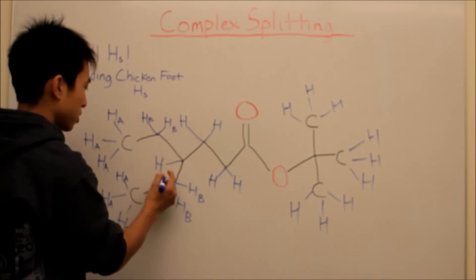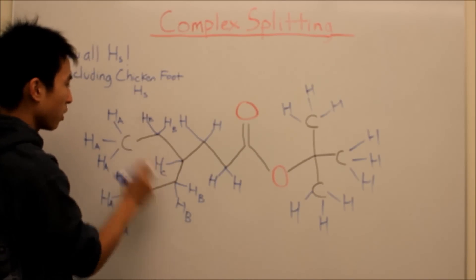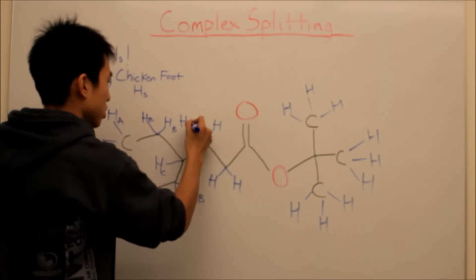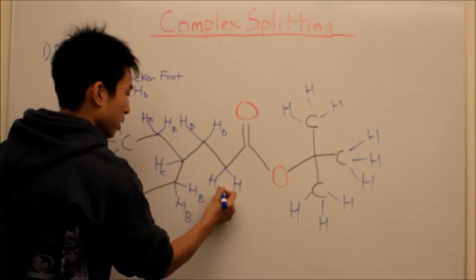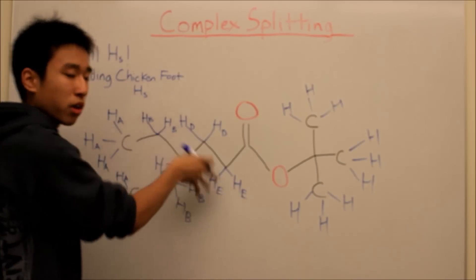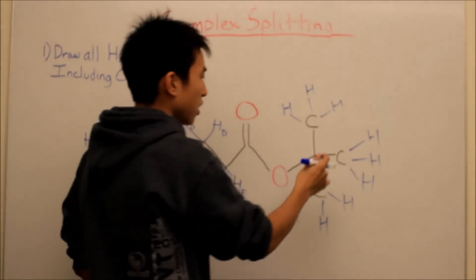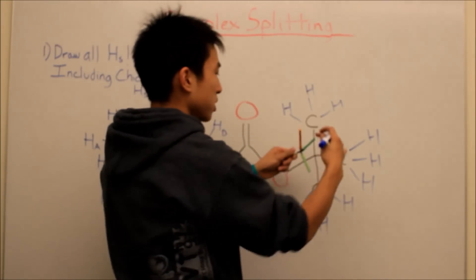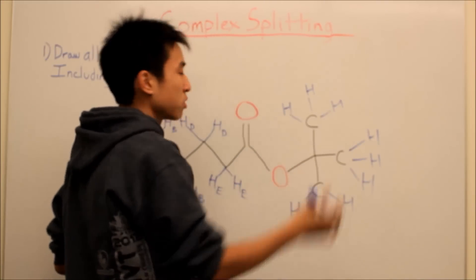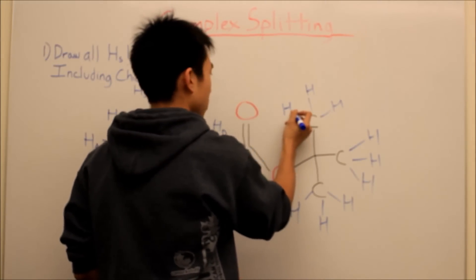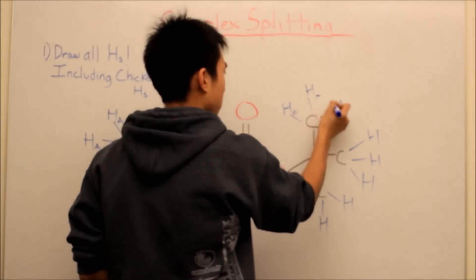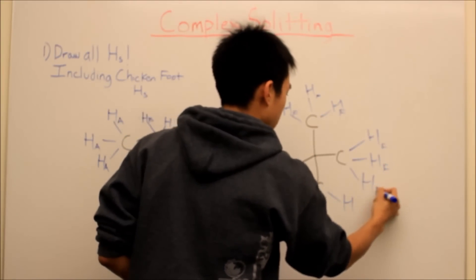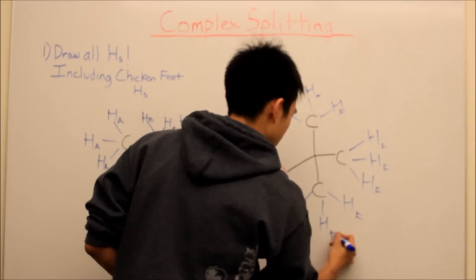Here you would have HC, because this hydrogen is different from all other environments. And then this would be HD, HD, HD, HD — because all the environments are still different. But here, like in my previous video, the bonds are always spinning, so all nine of these hydrogens would be equivalent: HF, HF, HF, HF, HF, HF, HF, HF, HF.